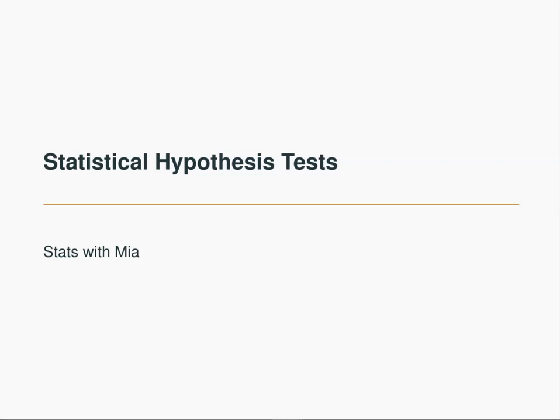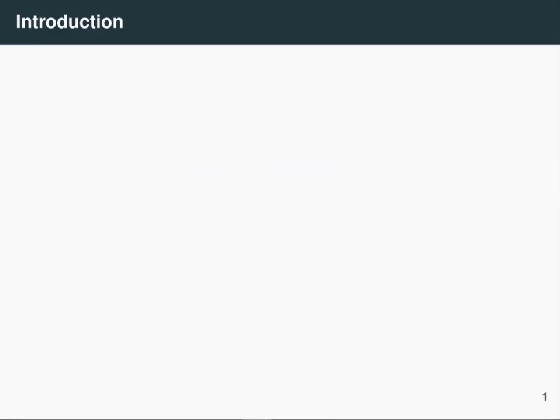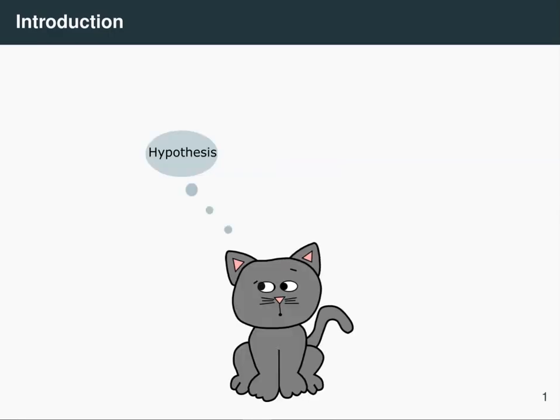Hi and welcome to Stats with Mia. In this video I'll try to give you an intuition behind statistical hypothesis tests. If you've come across this topic before, you'll know that it involves things like setting up a null and alternative hypothesis, calculating a test statistic, finding a critical value or a p-value, and making a conclusion about the test. It's a lot of new concepts to get used to, but I'm sure you'll be able to get a grasp of this because the type of reasoning that goes on behind hypothesis testing is something that you do all the time.